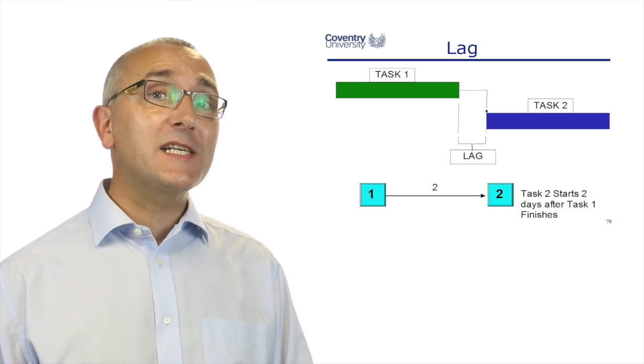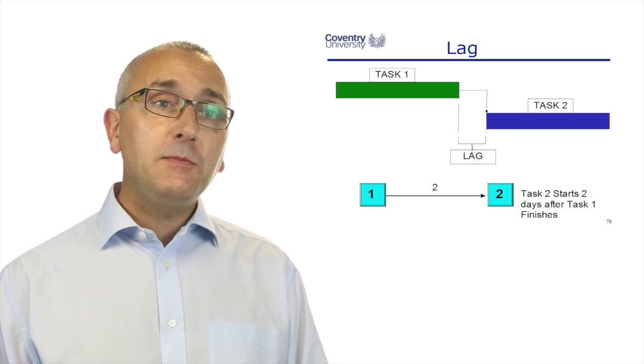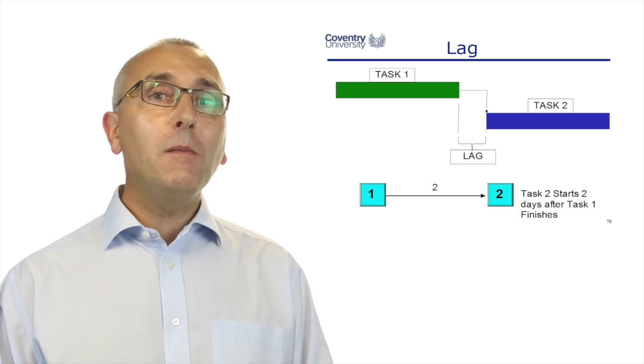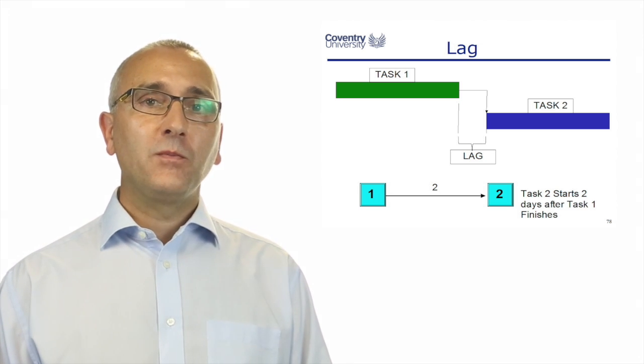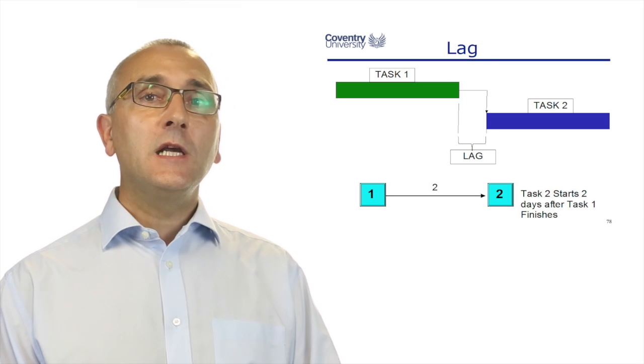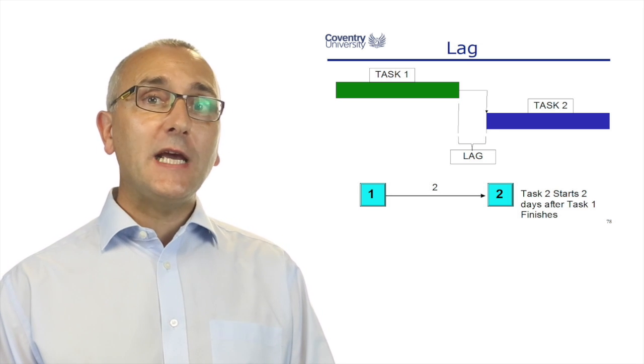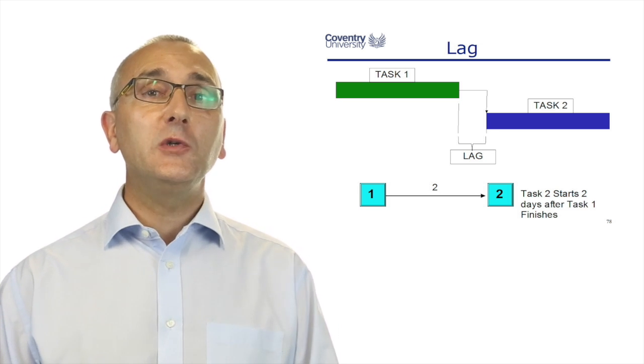In the Gantt chart, we just show this as a gap. In the dependency chart, we put a number onto the arrow. So when task one finishes, this is indicating we have to wait two days before task two can start.